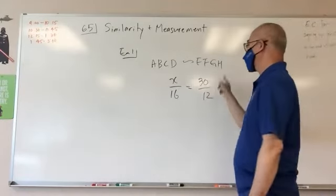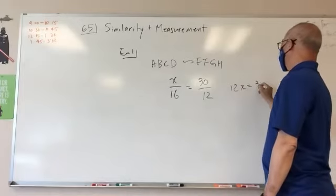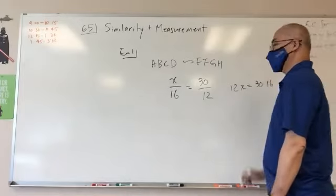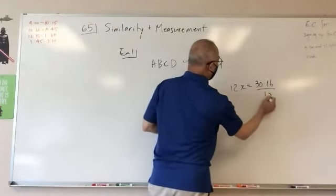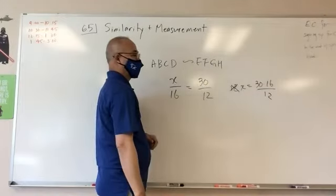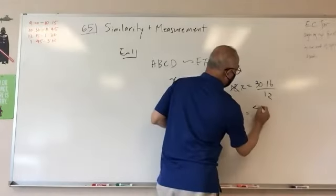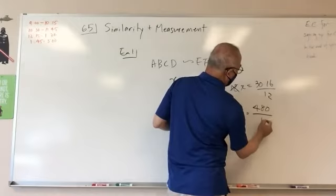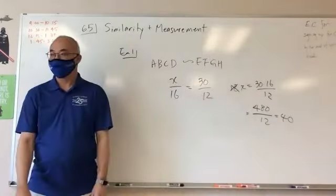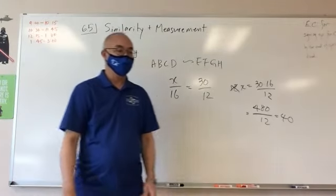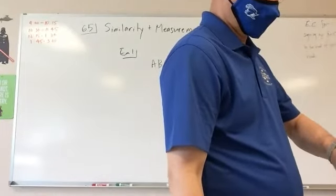So we'll just go ahead and cross multiply again. I get 12X is equal to 30 times 16. So I'm going to divide both sides by 12. This 12 goes away. So I have to multiply these. So I'm going to have to calculate this. So this is 480 divided by 12. It looks like it's 40. Okay? All right. That's how I would do that.